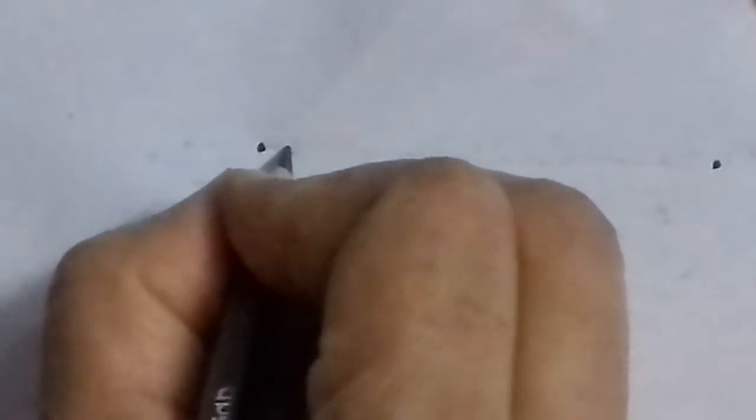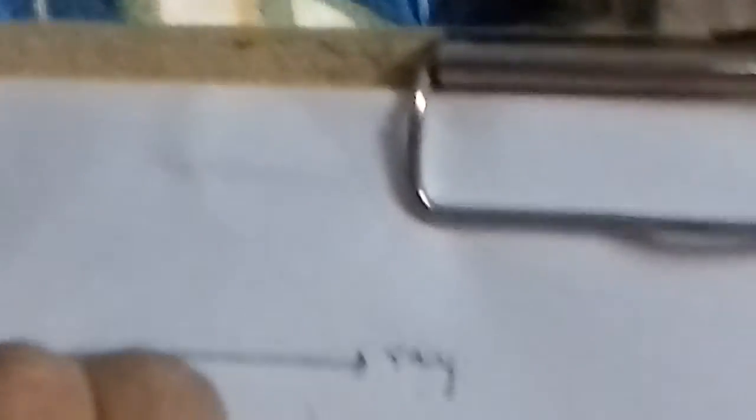You must know what is a ray. Light travels in a straight line. Suppose light travels from one point to another — if we join all these points, we get a straight line path. This is called a ray. A single straight line path of light is called a ray.